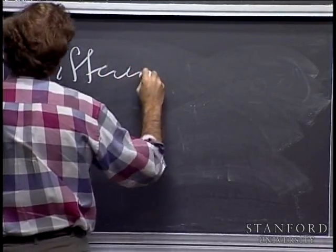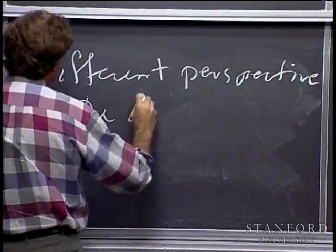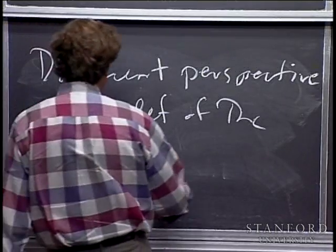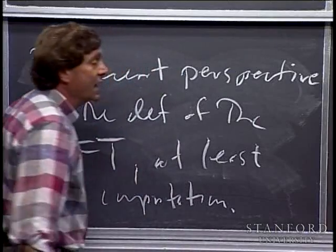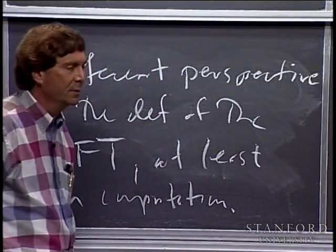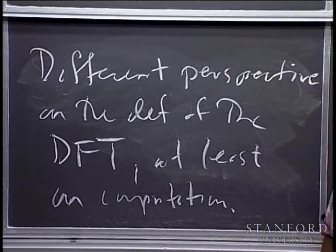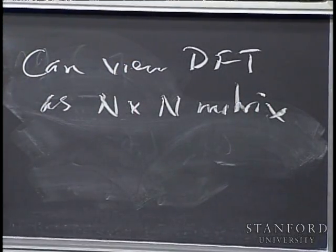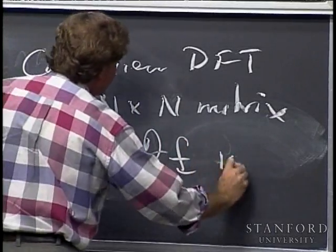I want to take a slightly different perspective on the DFT — a slightly different perspective on the definition and computation of the DFT. You can view the DFT as an N by N matrix. The process of computing the discrete Fourier transform of a given discrete signal is the process of matrix multiplication.